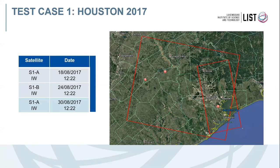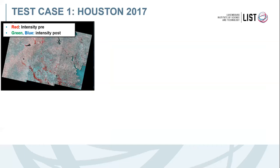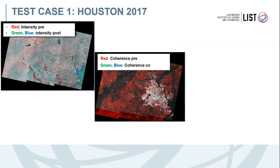The first example is the flood event that occurred in Houston in 2017. For this event, we have two SLC images acquired before the event and one during the event, all at 20-meter resolution. Here is an RGB color composition between the pre- and post-event intensity, where in red the decrease of backscattering on scarcely vegetated areas is highlighted. Looking at the coherence color composition, you can see that coherence is lost almost everywhere in the image, while in urban areas it is still present, with only some areas showing a decrease due to flood. This shows that we must focus the analysis on stable and steady targets to take advantage of coherence.